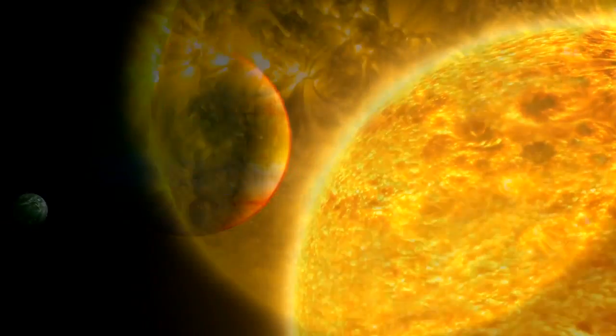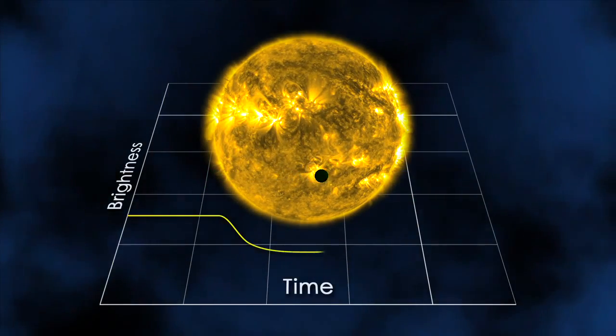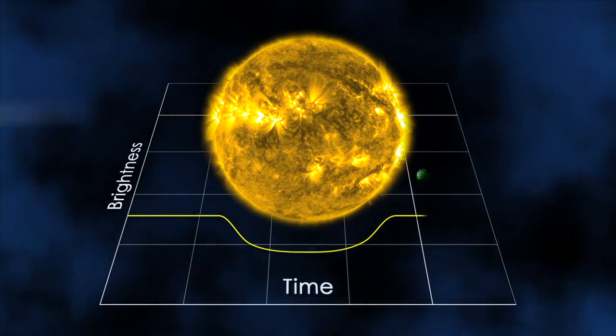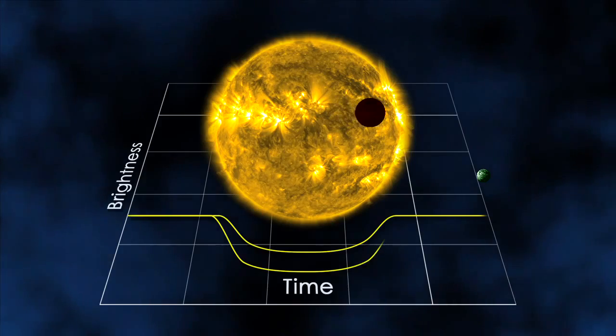For instance, when an exoplanet passes in front of its star, or transits, it blocks a fraction of the star's light and causes a dip in brightness. Large planets block more light, so the size of the dip can be used to determine the size of the planet.